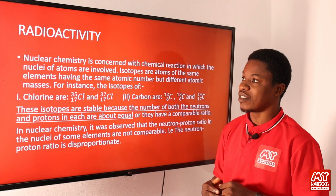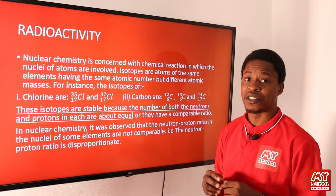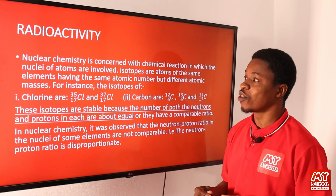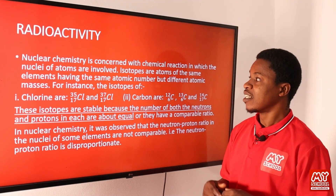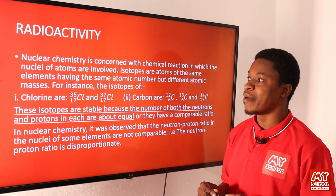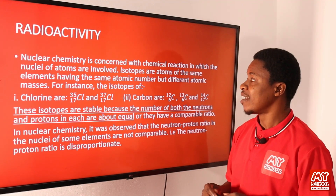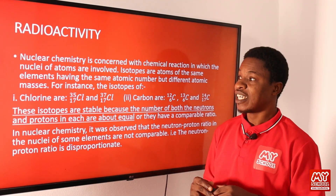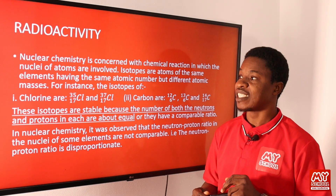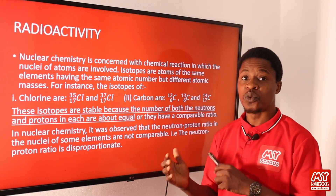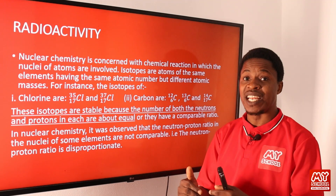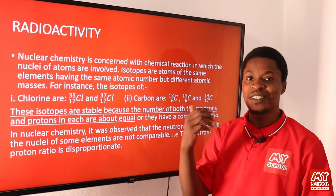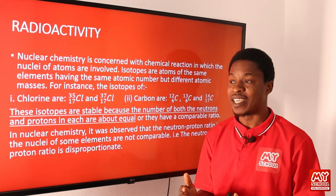Nuclear chemistry is an aspect of chemistry concerned with chemical reactions in which the nuclei of atoms are involved. Isotopes are atoms of the same element having the same atomic number but different atomic masses or mass numbers. They are two or more atoms of the same element with the same number of protons but different mass numbers.